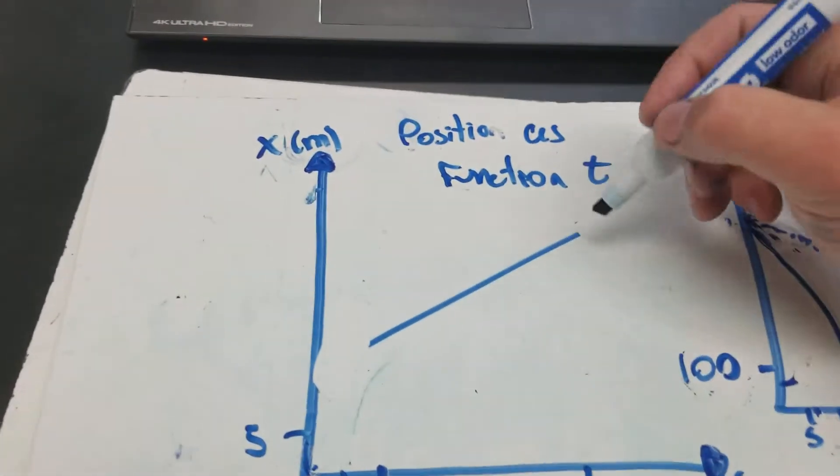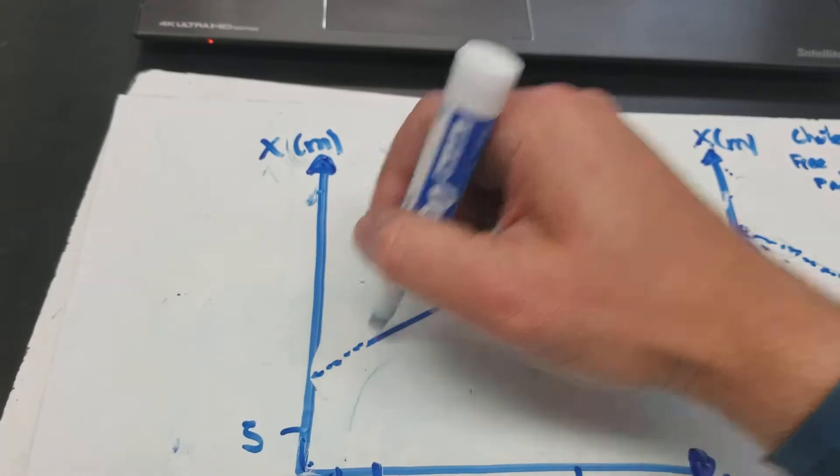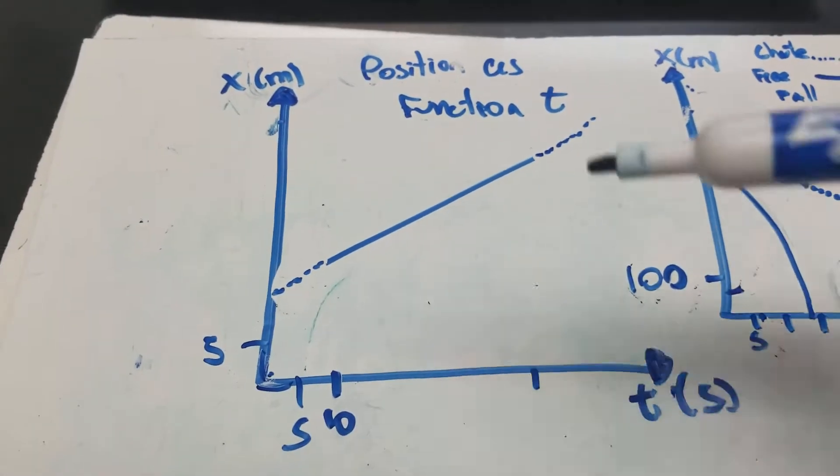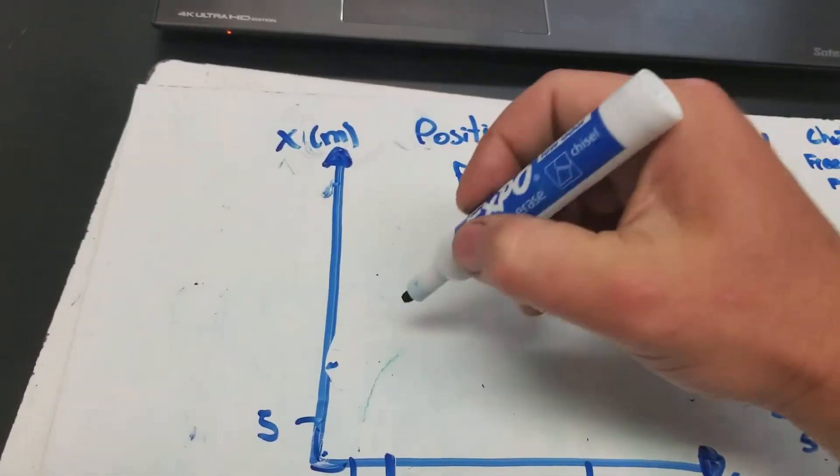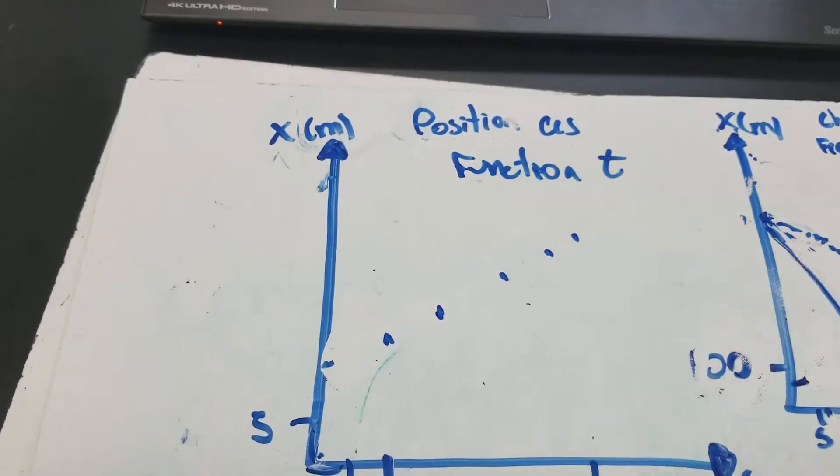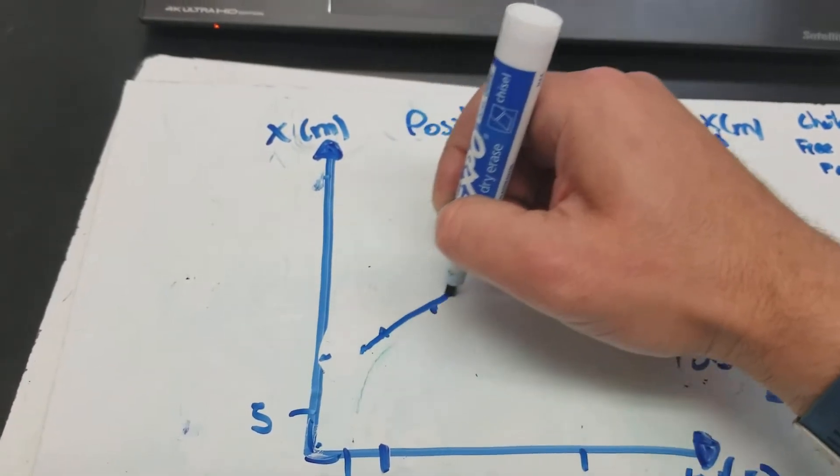Now, even though it seems as if you could continue the pattern like this, you shouldn't do that unless you're told to, right? So you can only actually graph what you have. So let's say, for example, you collected these data points, right?